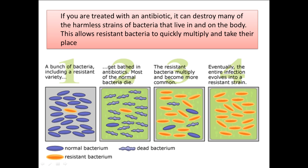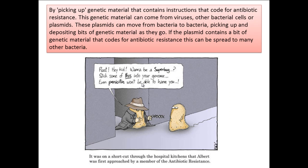Therefore, their numbers can increase and can cause problems within a person. Another way to promote resistance is the method by which bacteria can swap genetic information between the same species and between different species. They do it via an organelle called a plasmid — a circular piece of DNA. On these circular pieces of DNA, they can carry genes for resistance.